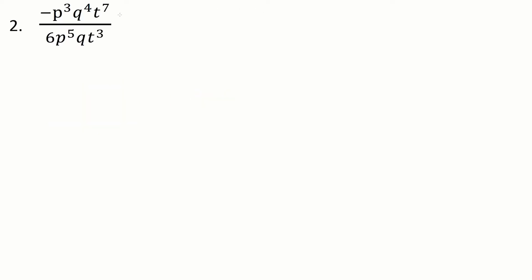Question two: we have another monomial divided by a monomial. Our exponents are quite a bit larger here, plus we also have this negative out front. Let's keep the idea of keeping your coefficients separate, then looking at one letter at a time. There's no brackets with this p, so that negative is actually like a negative 1 — I could even write in a negative 1 there. So the coefficient is negative 1 divided by negative 6. Let's write everything out: minus 1, then p, p, p, q to the fourth...